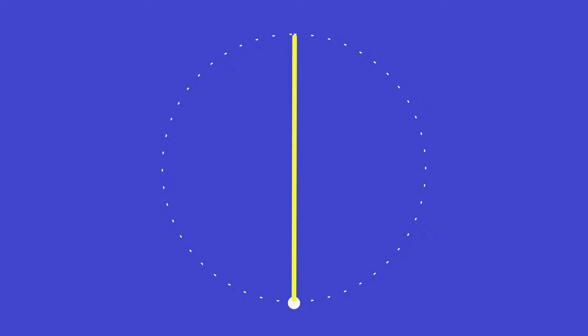Imagine that this dotted circle is our one beat. We can subdivide it into as many smaller equal pieces as we want. If we cut it in half, we now have two equal beats, and now we have a one against two pattern.